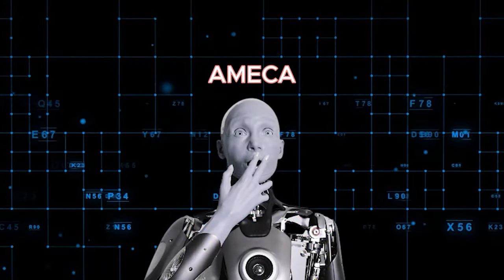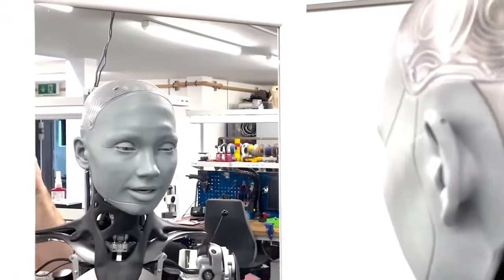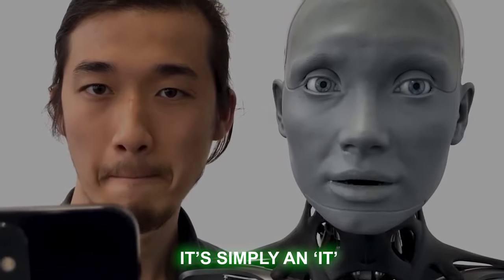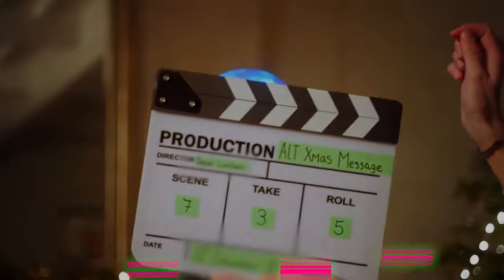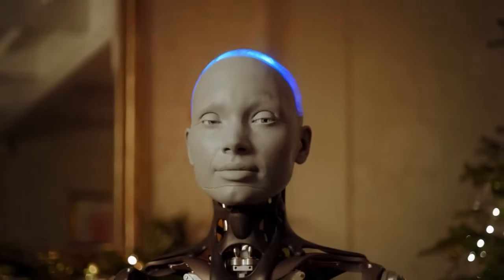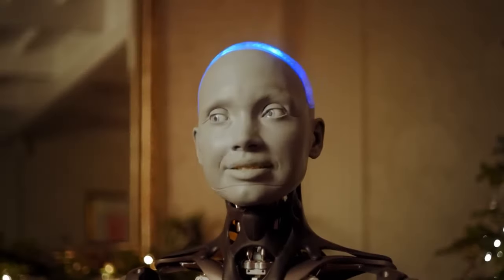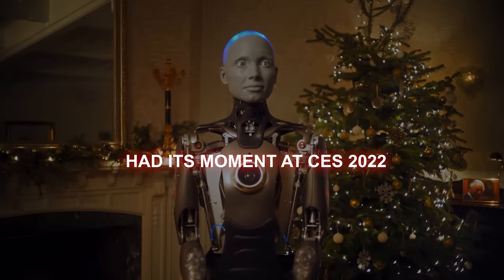Appearance-wise, Amica stands out. It has this gray rubber skin on its face and hands. Then guess what? It's designed to look genderless. So it's not a he or a she, it's simply an it. And it's been making waves. From getting attention on Twitter and TikTok to presenting an alternative Christmas message on Channel 4, Amica is the talk of the town. It even had its moment at CES 2022, with major outlets like CNET covering it.